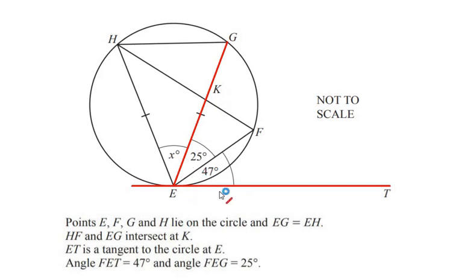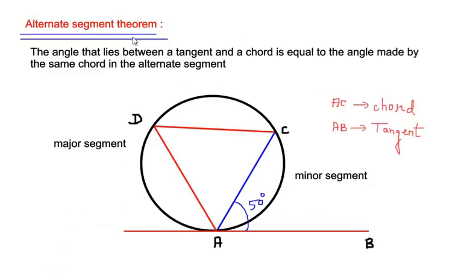The theorem states that the angle that lies between the tangent and the chord is equal to the angle made by the same chord in the alternate segment. So let us try to understand this. You can see that I have drawn a circle and there is a line AB which is acting as a tangent to the circle since it touches the circle at point A.